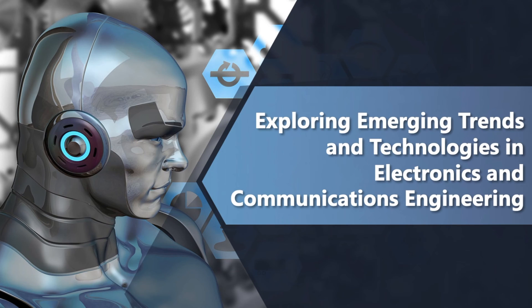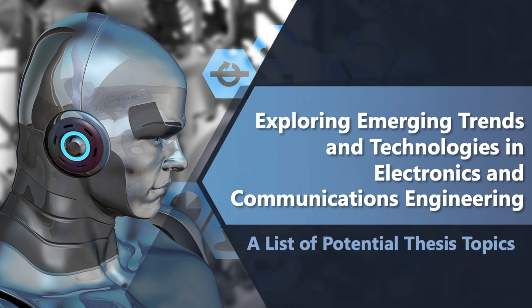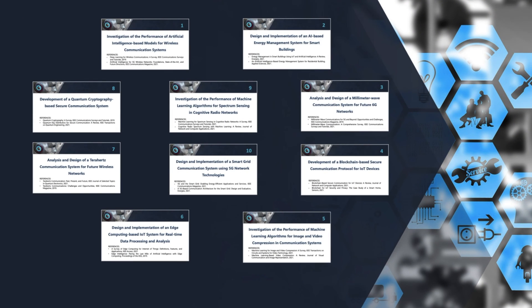In this list, we'll be exploring emerging trends and technologies in the field, with an emphasis on current and future developments. These topics cover a range of areas, including wireless communication, artificial intelligence, Internet of Things or IoT, blockchain, quantum cryptography, and smart grid technologies. Whether you're a student or a researcher in the field, these topics offer the opportunity to explore cutting-edge research in electronics and communications engineering and contribute to the advancement of the field.